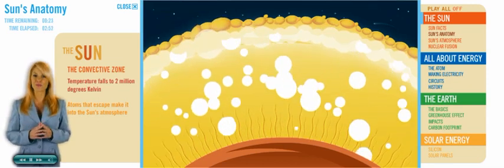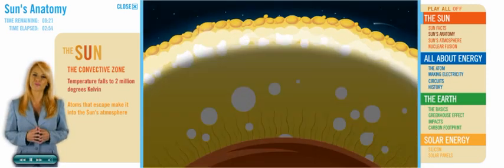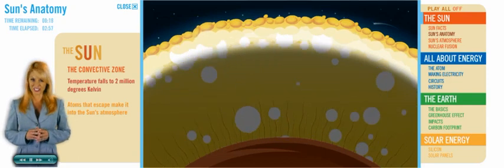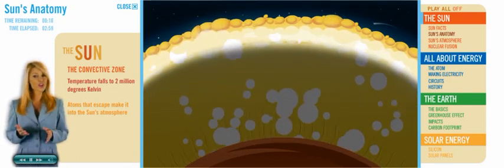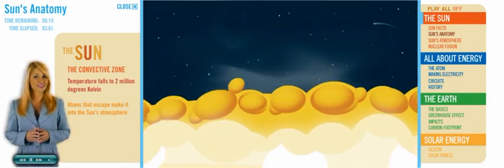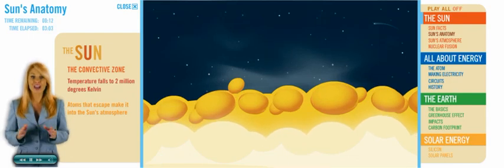This swirling action in the foggy convective zone makes the Sun's surface appear bubbly, like boiling syrup. Officially, it's called granulation. But don't be misled by the name. Granules, when we're talking about the Sun, are more than 600 miles across.